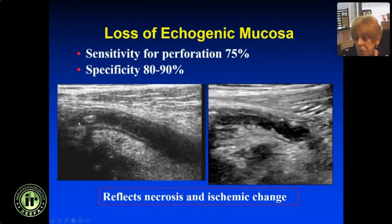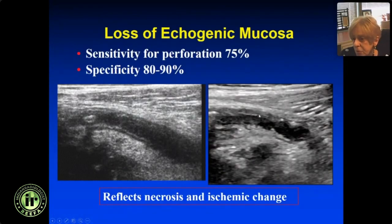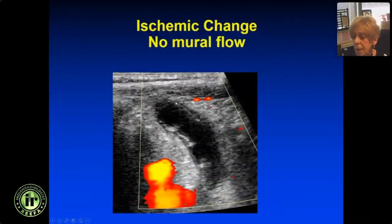Here's appendicitis with a calculus. Follow the mucosa — you lose it at the tip, which is a sign of ischemia and likely perforation. Sensitivity for perforated appendicitis is about 75% with relatively high specificity. Here's another one — you can see bits and pieces of the echogenic submucosa; that's reflecting ischemic change. You're losing the submucosa, and there's a high likelihood that this is perforated or will perforate. If you put color on and there's ischemia, you won't see much flow in the appendix.